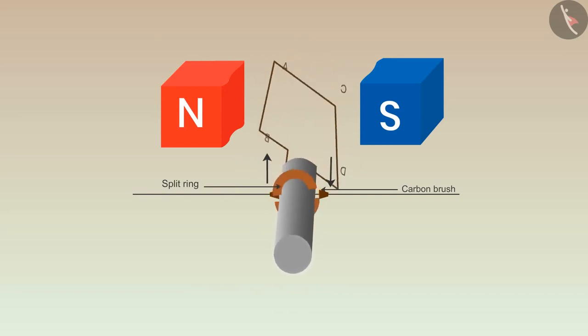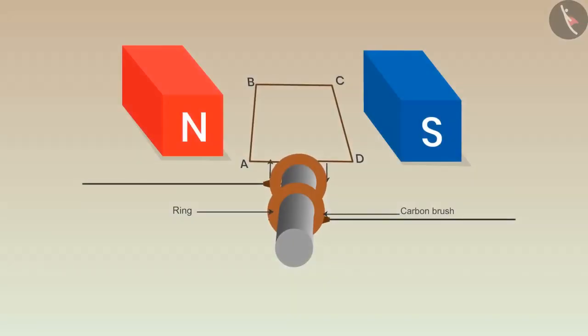Before finding the direction of induced electric current, let us do a small change in the setup. Replace the split ring with two complete rings and watch what effect this change would have on the system. Rotate the coil in clockwise direction with the help of an axle. Then use Fleming's right-hand rule to find out the direction of the induced current.